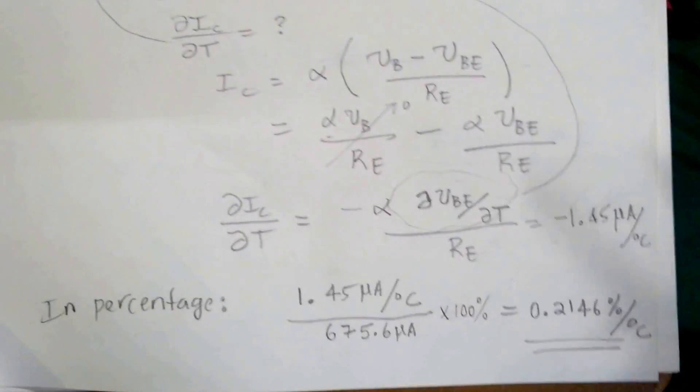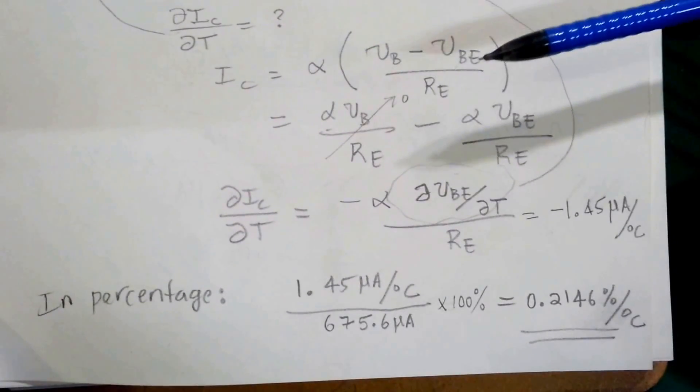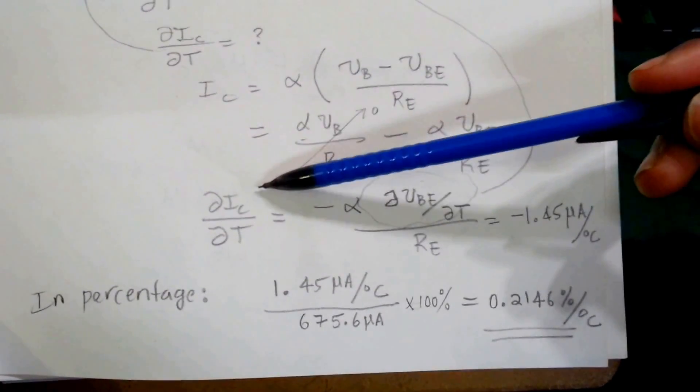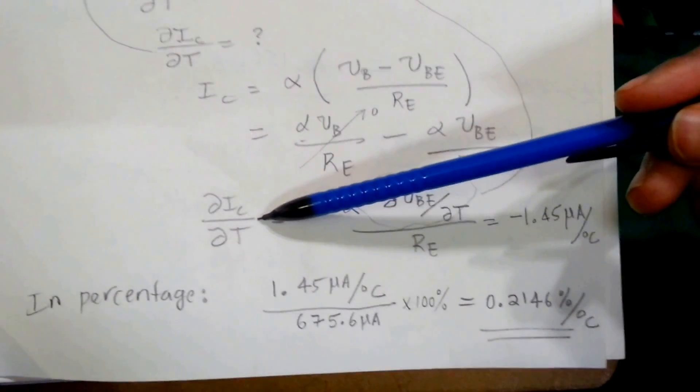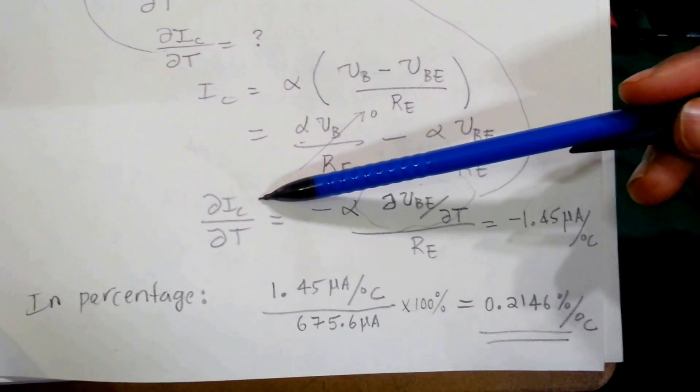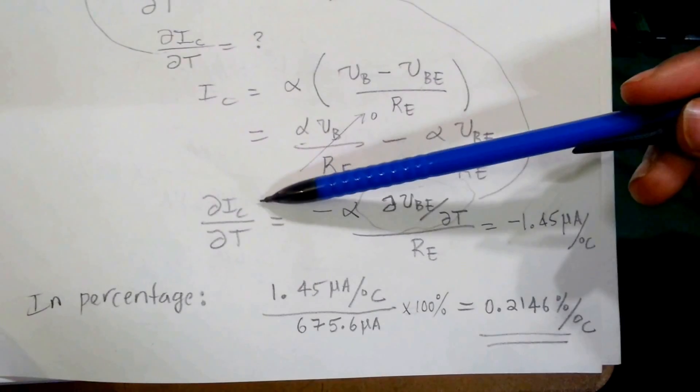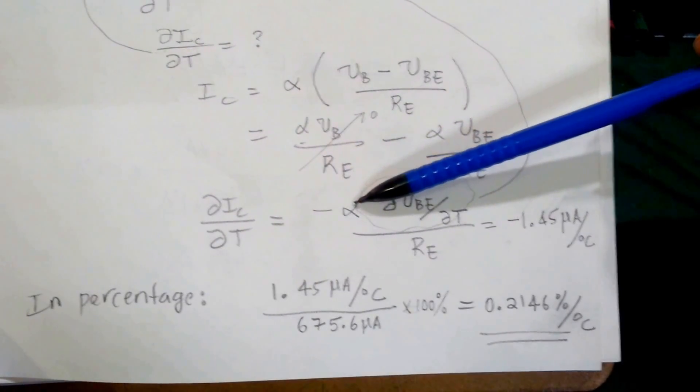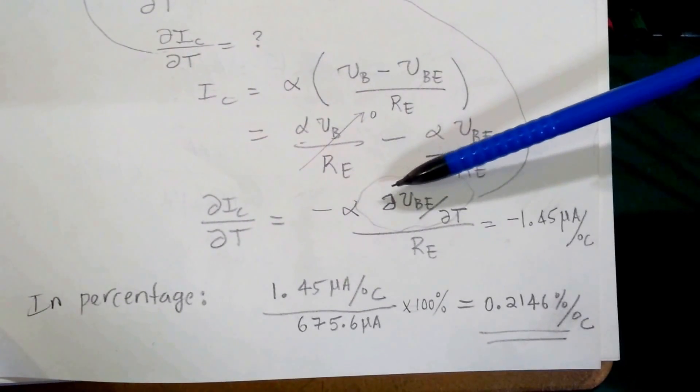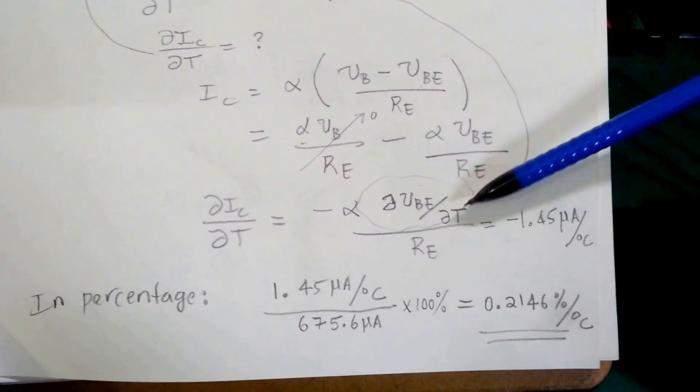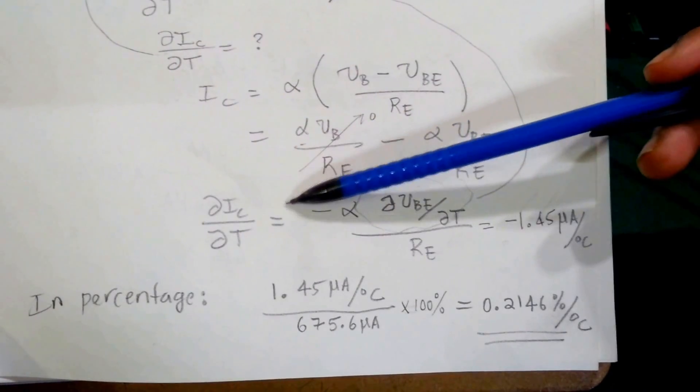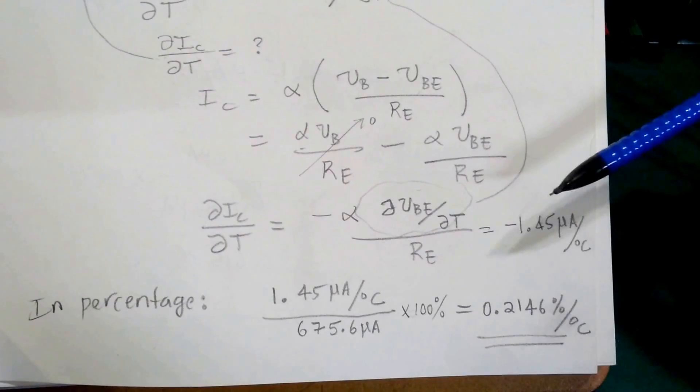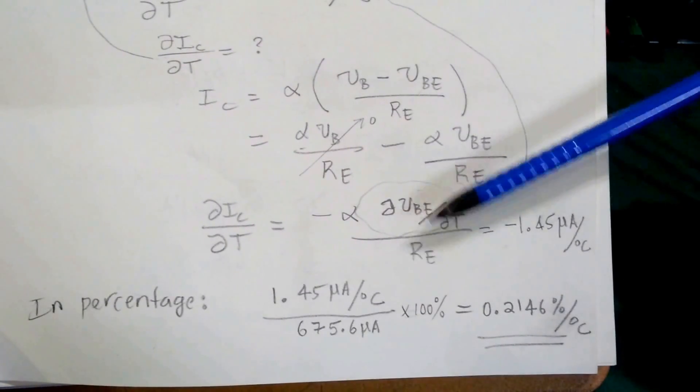Sorry guys, on my previous recording, my camera died while I reached this step when calculating the temperature coefficient of the collector current with respect to temperature. So let's continue that. We'll still have part D of question 2. We said that minus alpha multiplied by delta VBE by delta T divided by RE is the temperature coefficient of the collector current. And if we plug those values, since we know all this, this part comes from here.